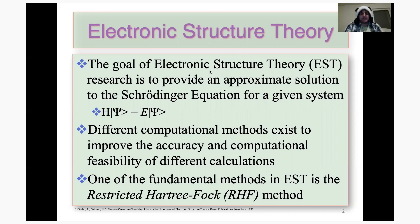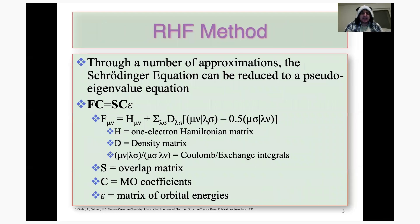Of all the methods in electronic structure theory, one of the fundamental ones is the restricted Hartree-Fock method. The idea behind it is that you apply a number of approximations to the Schrödinger equation, and by doing that, you can reduce it down to a matrix-based pseudo-eigenvalue equation with the form F times C equals S times C times epsilon.